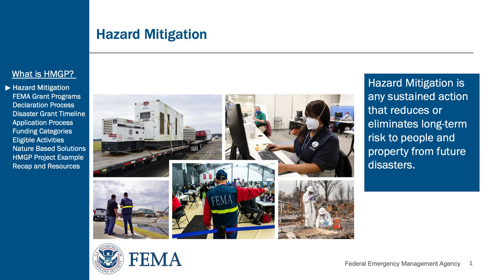Mitigation planning breaks the cycle of disaster damage, reconstruction, and repeated damage. FEMA's Hazard Mitigation Assistance provides funding for eligible mitigation measures that reduce disaster losses. It also reduces vulnerability of communities to disasters and their effects. It promotes individual and community safety and increases a community's ability to adapt to changing conditions, allowing it to withstand and rapidly recover from disruption due to emergencies. It also promotes community vitality after a disaster and lessens response and recovery resource requirements following a disaster.